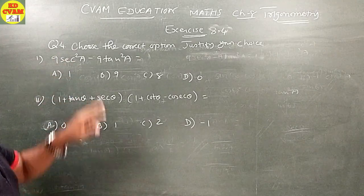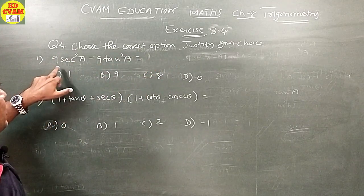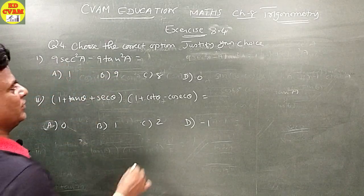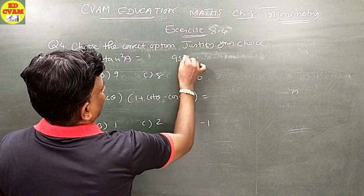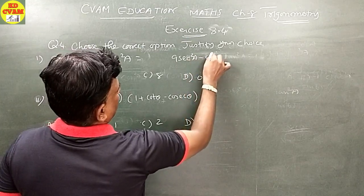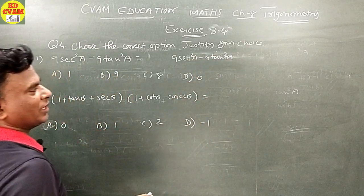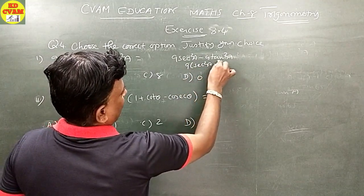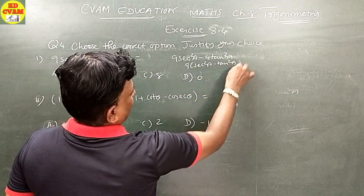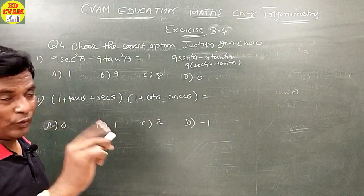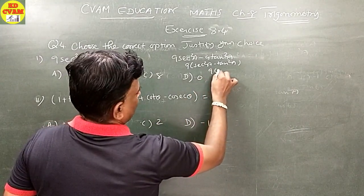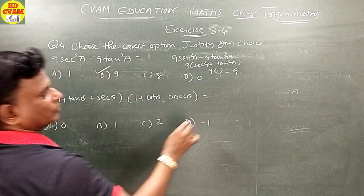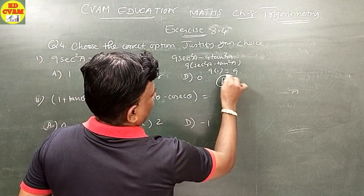Question number 4: Choose the correct option and justify your choice. First question: 9 sec squared A minus 9 tan squared A. Take 9 as common, giving 9 times (sec squared A minus tan squared A). Since sec squared A minus tan squared A equals 1, the answer is 9. The correct option is B.